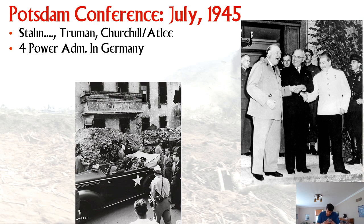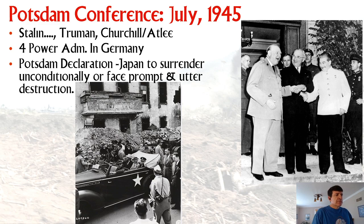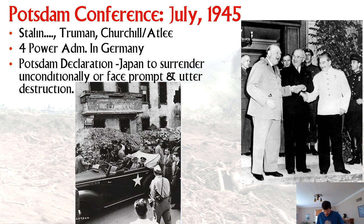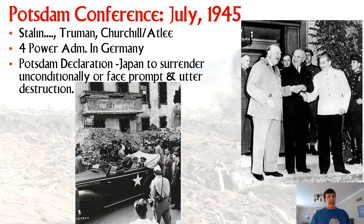At Potsdam they decided they'd all administer Germany together and someday reunify it. They issued the Potsdam Declaration to Japan: unconditionally surrender or face 'prompt and utter destruction.' There were a few elements that implied maybe some conditions, but this was issued by Britain and the United States. Stalin was still technically neutral — Japan didn't yet know Stalin was about to break that neutrality.